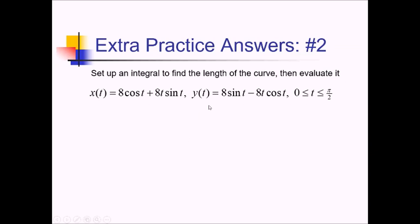To find the arc length of this parametric curve, I'm going to need to take the derivatives of both x and y with respect to t. So for dx over dt, going from left to right here, we get negative 8 sine of t plus — we're going to need a product rule here. So we have u prime v plus u v prime. That would be 8 sine of t, and then 8t times the derivative of sine, so plus 8t cosine of t. These sine of t terms cancel, leaving us with just 8t cosine of t.